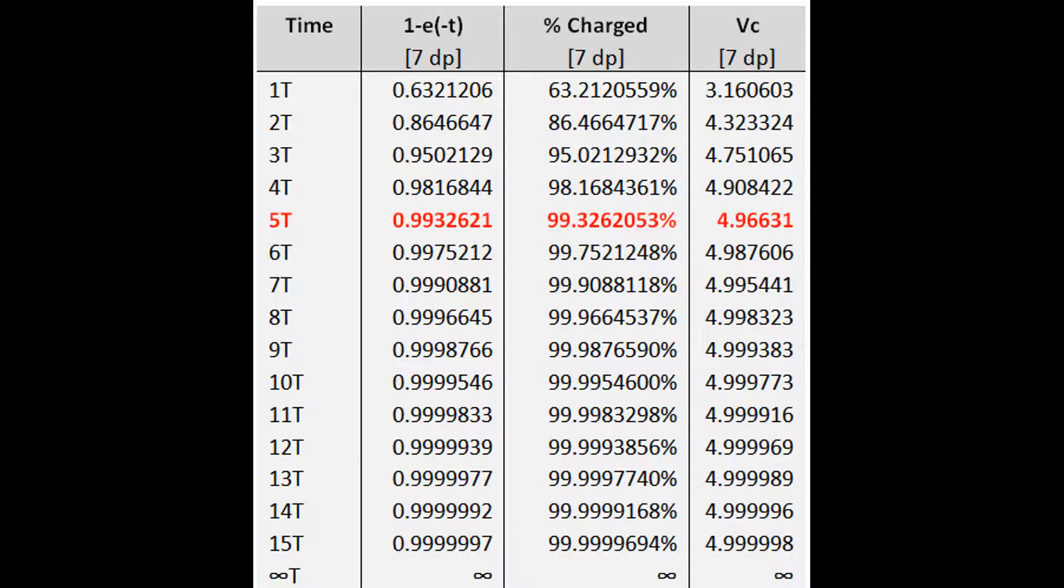So why use 5T and why is the original graph shown wrong? Well, it is agreed in physics that most change happens before 5T, and once you hit 5T the incremental change is so tiny beyond that it is relatively impractical to use. It also ties back with KVL circuit analysis.